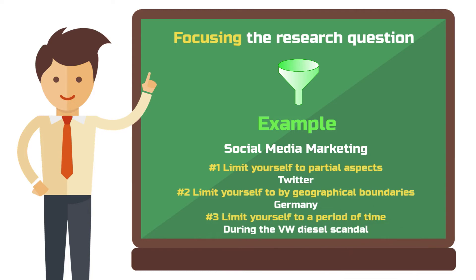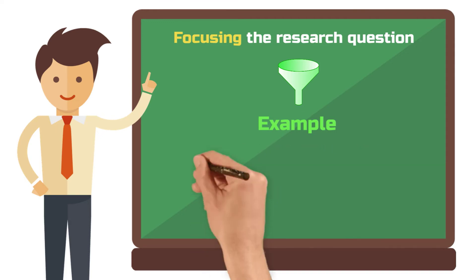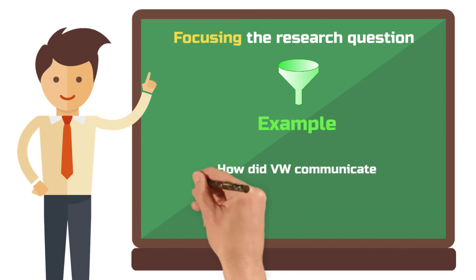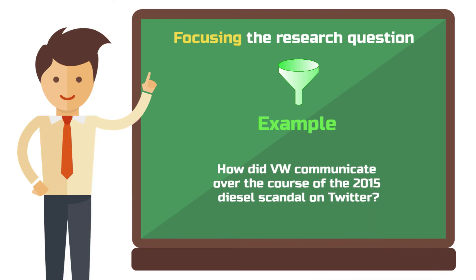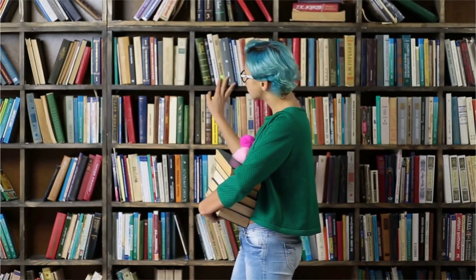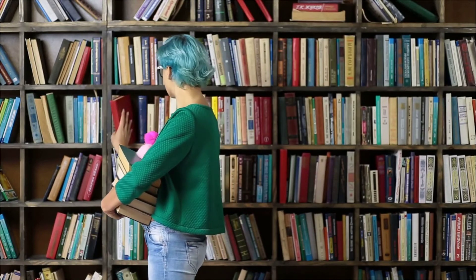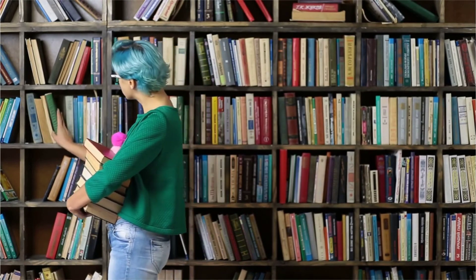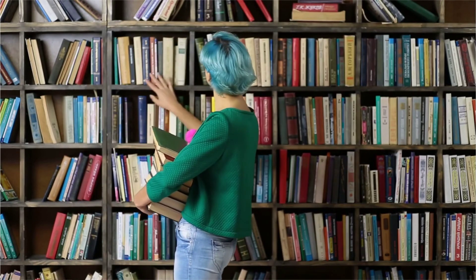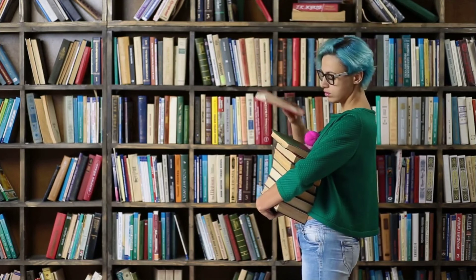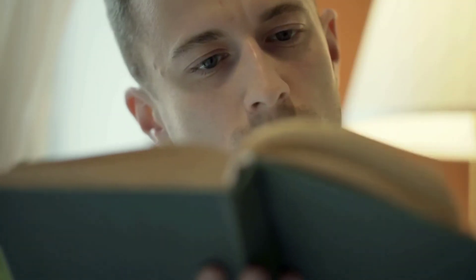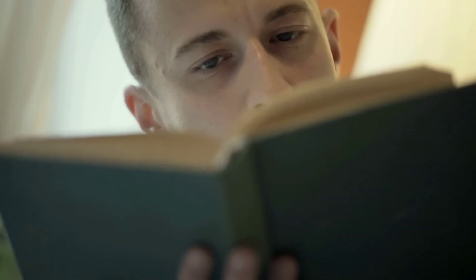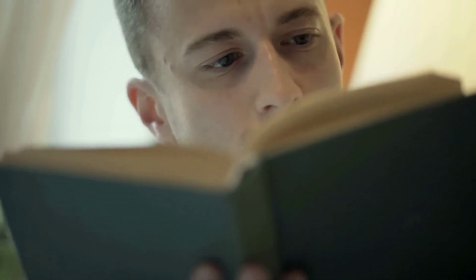Now, merge your narrowing with the question type you selected earlier. For the example, this could be: how did VW communicate over the course of the 2015 Diesel scandal on Twitter? The more concise your research question is formulated, the better you can use it for the development of your overall argument. Make sure to explain every concept you use in your research question prior to introducing it — typically in the introduction. It must not happen that the reader stumbles upon an ambiguous concept in your research question without being introduced to it earlier.